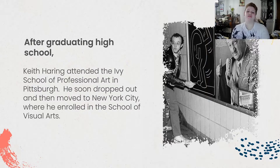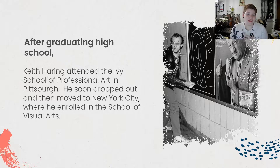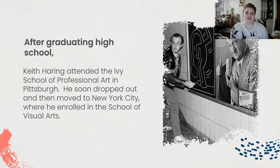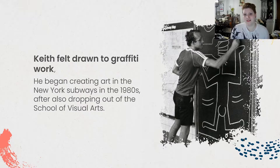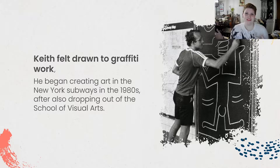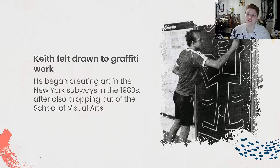After graduating high school, Keith Haring attended the Ivy School of Professional Art in Pittsburgh, but he soon dropped out because he realized they were only going to teach formal art, which didn't include any of the artworks he wanted to learn about. He eventually moved to New York City and enrolled in the School of Visual Arts. While in New York, he noticed graffiti work — art you see in subways, on sides of trains and buildings — and began creating art in the New York subways in the 1980s, after dropping out of the School of Visual Arts as well.